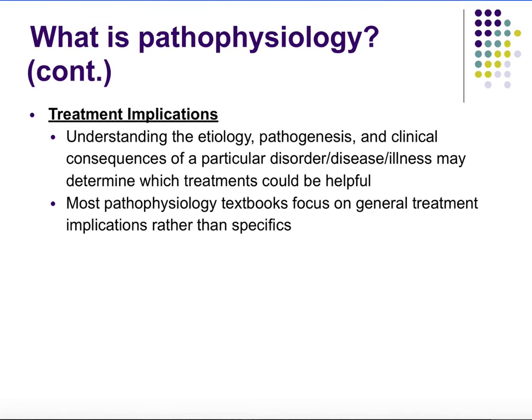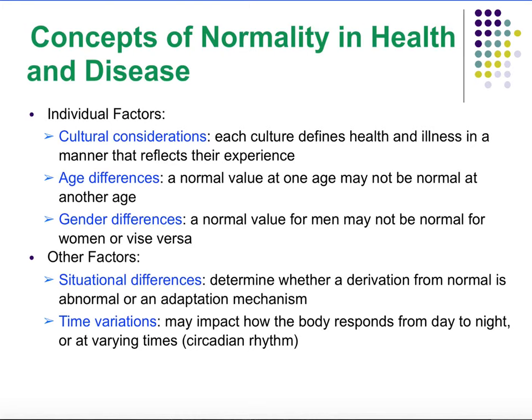Let's move on to treatment implications. Understanding the etiology — the cause — the pathogenesis, the course of development, and clinical consequences of a particular disease may determine which treatment could be most helpful. It's important to understand what caused the disease and how it developed to figure out the best course of treatment. You don't want to just deal with the signs and symptoms all the time; you want to look at the underlying cause. When you get rid of that cause, a lot of the time the signs and symptoms will go away — so you're not just putting a Band-Aid on.